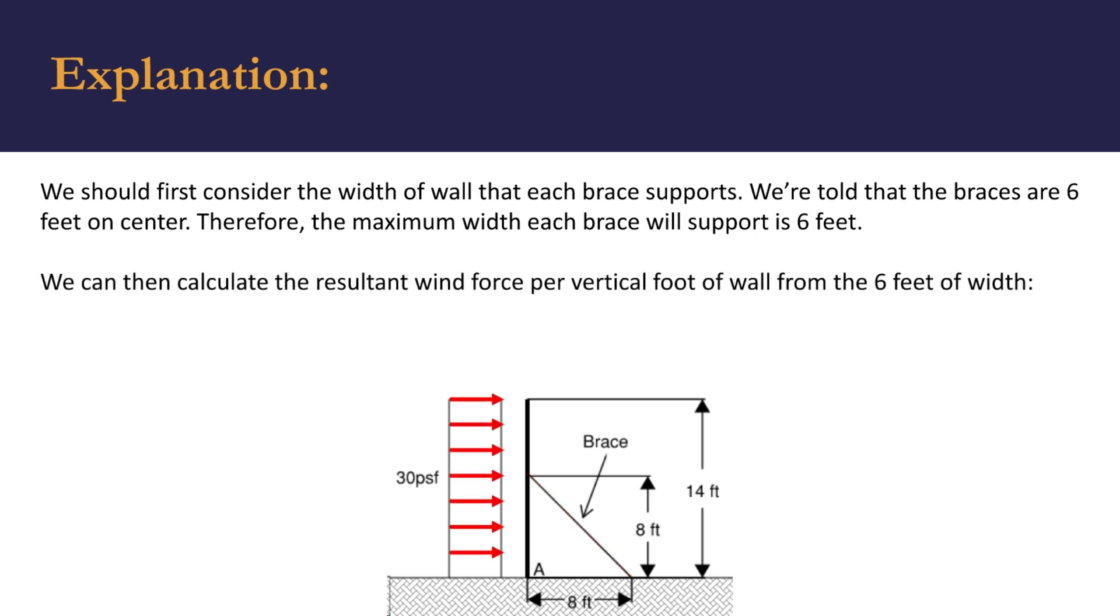We can then calculate the resultant wind force per vertical foot of wall from the 6 feet of width. So W equals 30 pounds per square foot times 6 feet, and this gives us 180 pounds per foot, that is per vertical foot at each brace location.